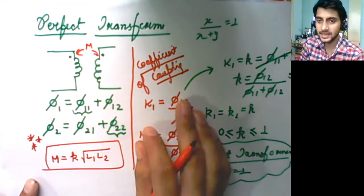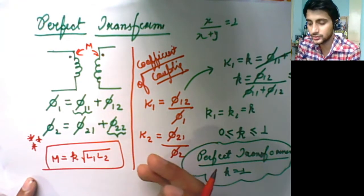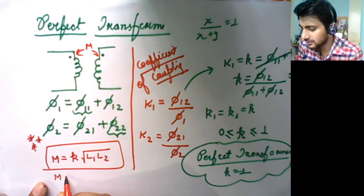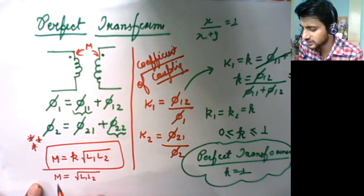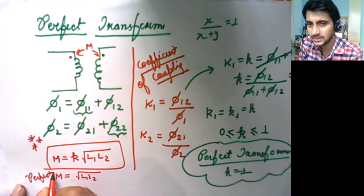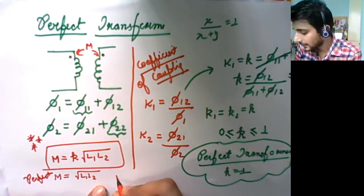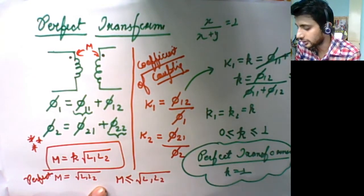Therefore we can say: in a perfect transformer, since k = 1, M = √(L1·L2). In general, M will be less than or equal to √(L1·L2). So the definition of a perfect transformer is when M equals the geometric mean of L1 and L2, i.e., M = √(L1·L2). The coefficient of coupling is unity, and the mutual inductance equals √(L1·L2).